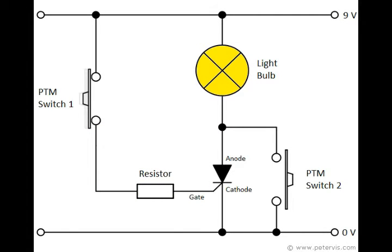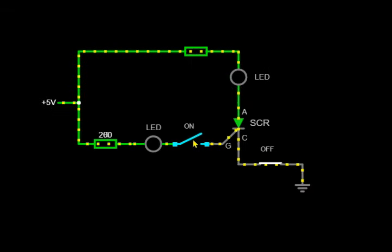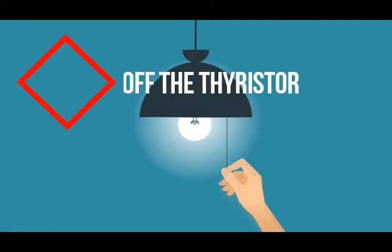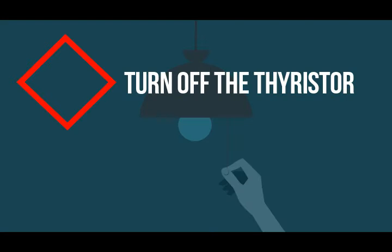When the thyristor turns on and passes current in the forward direction with positive anode, the gate signal loses control due to the regenerative action of the two internal transistors. In this case, applying any signal or pulse to the gate after initial startup will have no effect because the thyristor is already conducting and fully on.